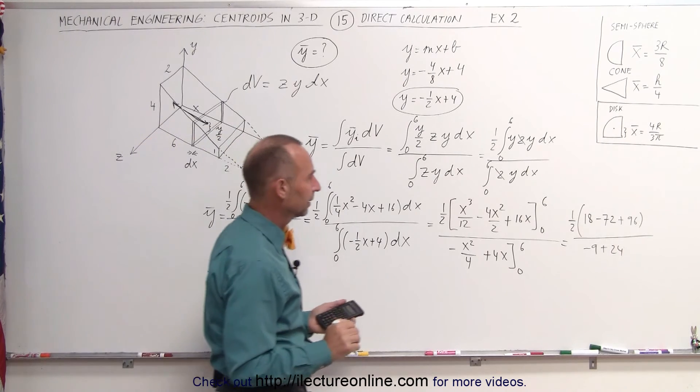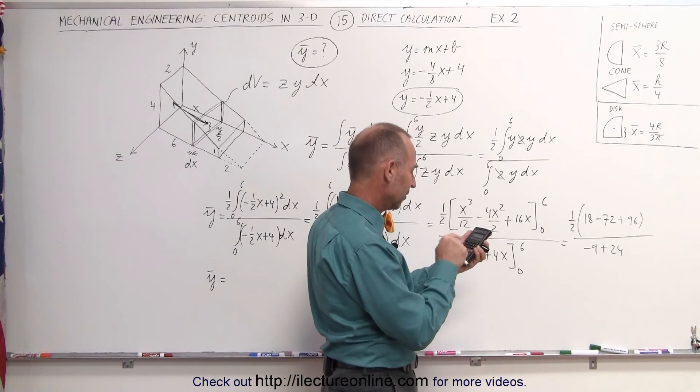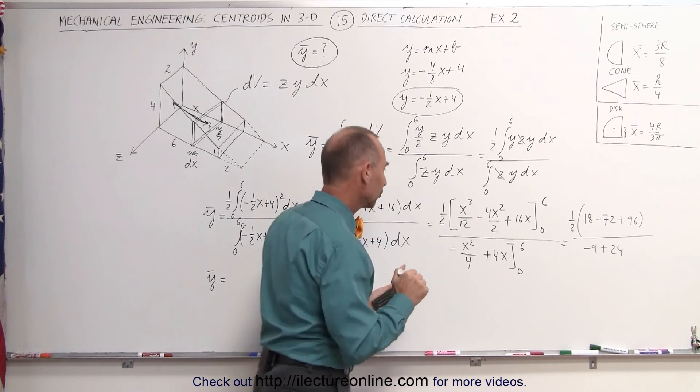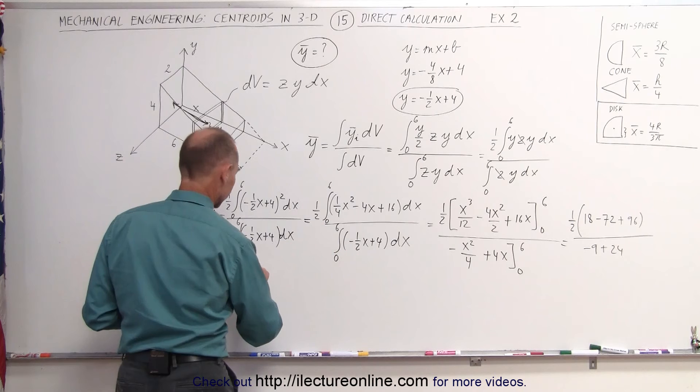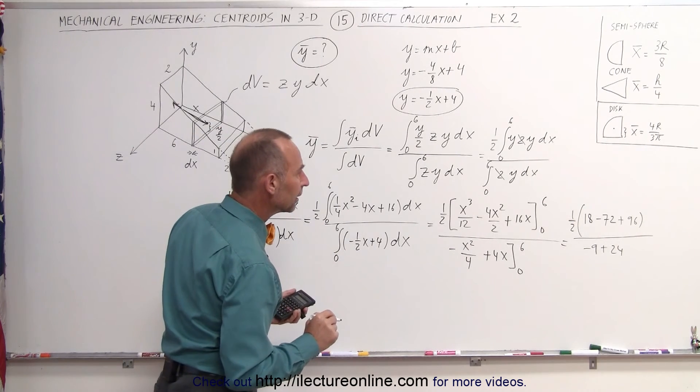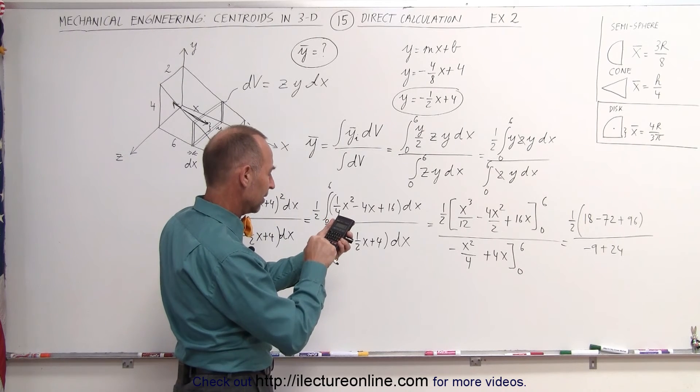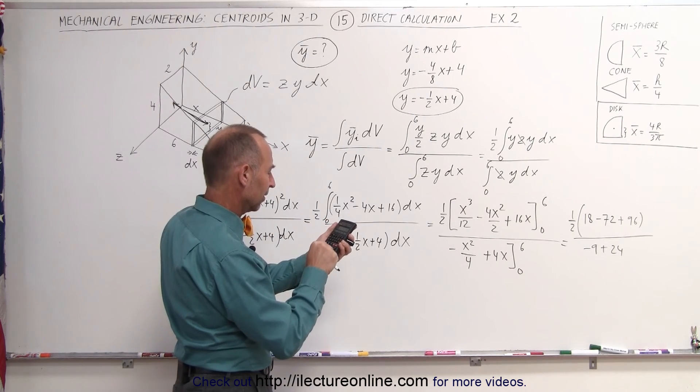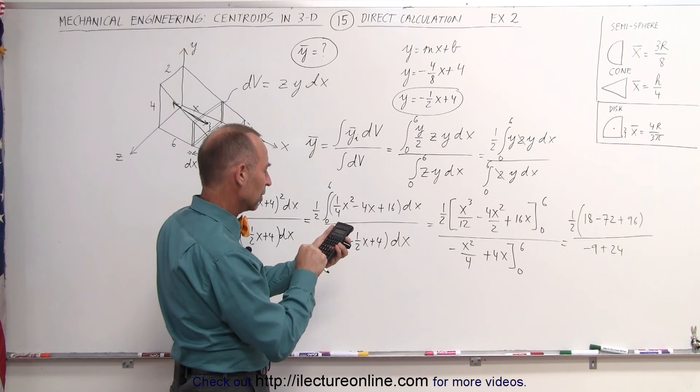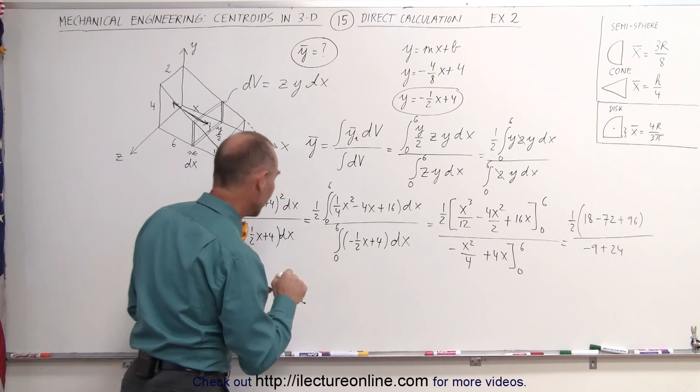Simplifying that a little bit further, in the numerator, we get 18 minus 72 plus 96, divide by 2. That gives us 21, divided by, let me see here, is that correct? 18 plus 96, minus 72, 42 divided by 2, yes.